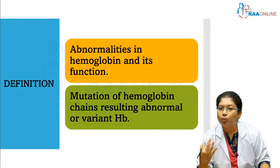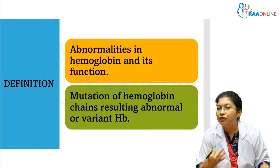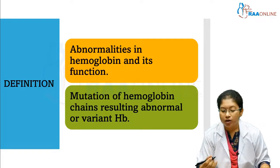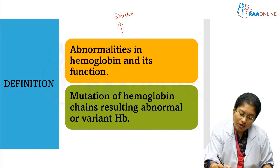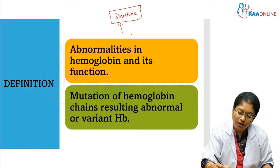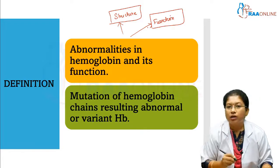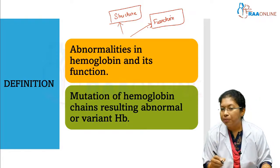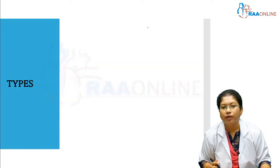The hemoglobins are produced in an abnormal fashion, or otherwise their function is abnormal. So only two things: structure is affected, or otherwise function is affected. These two things are happening because of mutation in the hemoglobin chain.